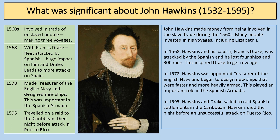In 1578 Hawkins was made Treasurer of the English Navy. One of his most significant contributions was his design of new ships, which was crucial in the Spanish Armada. He changed the design of English ships to make them faster, more manoeuvrable and more heavily armed — absolutely crucial when revising the Spanish Armada. In 1595 he was travelling in the Caribbean and died the night before an unsuccessful attack on Puerto Rico. So that's John Hawkins — a significant individual for you to know about.